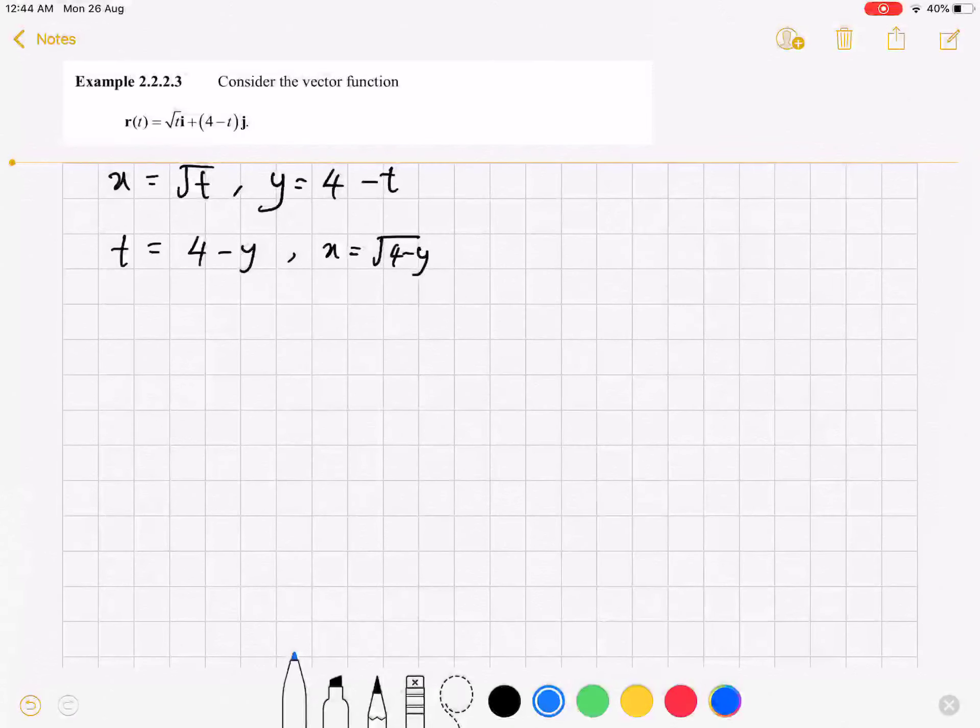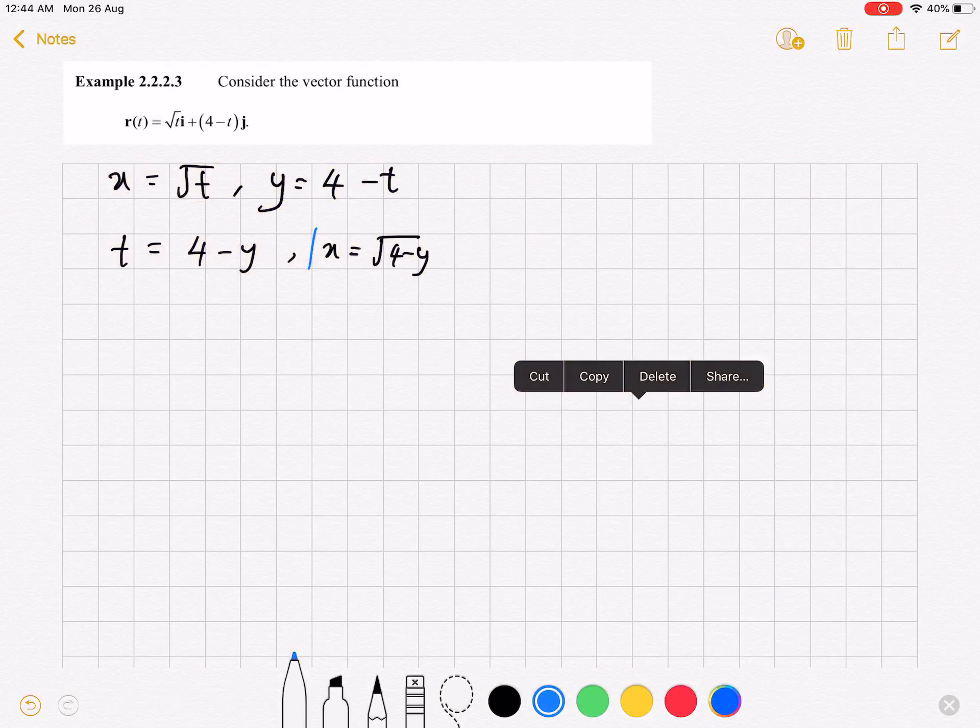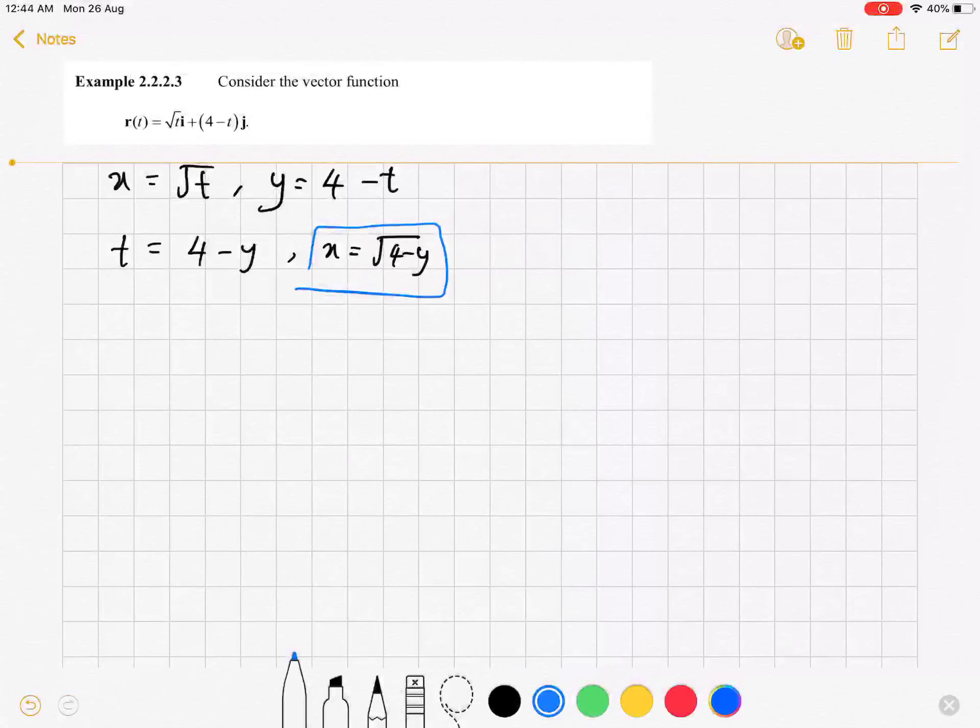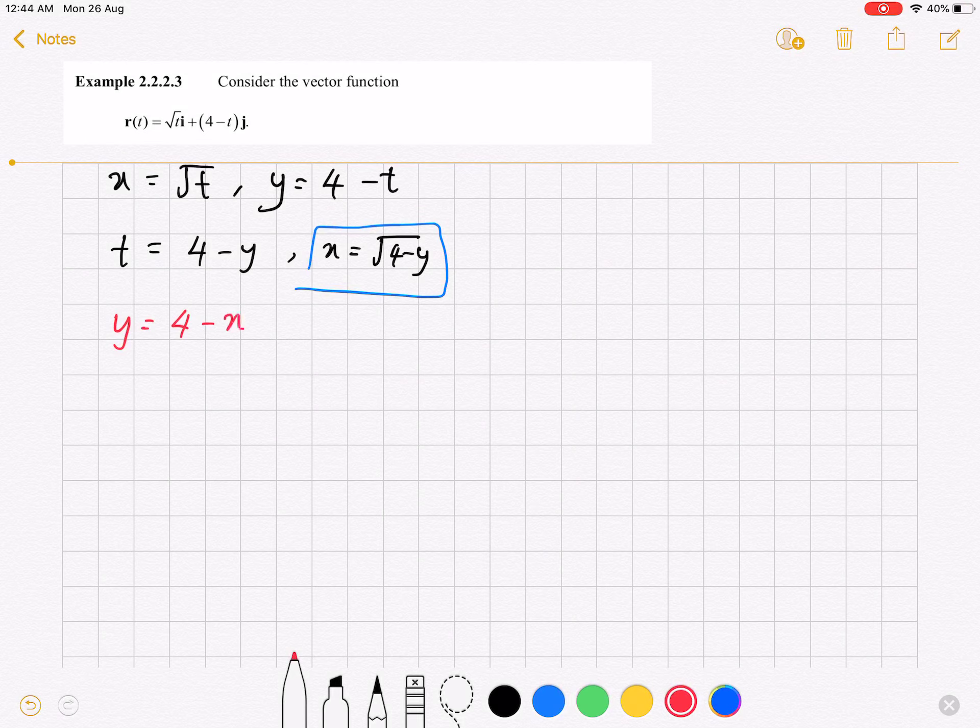This one will become our rectangular equation actually. But then, it's quite tough to get the graph by using this equation. Some of you maybe can, but maybe some of you don't know how the graph will be. So, convert this one to the form that is familiar with everybody. We will have y equals to 4 minus x squared.